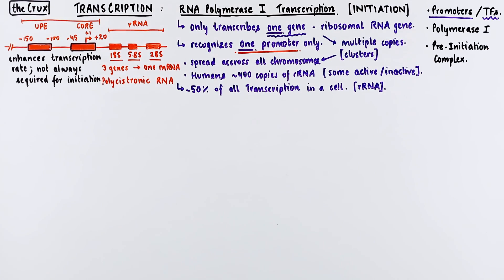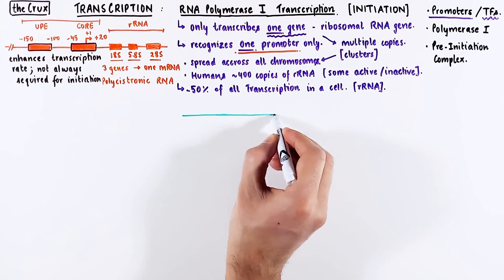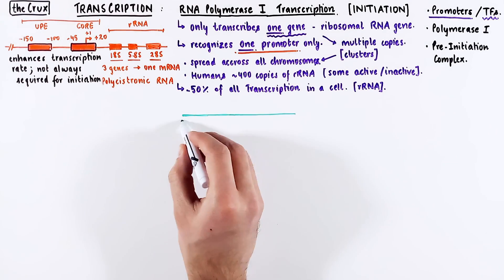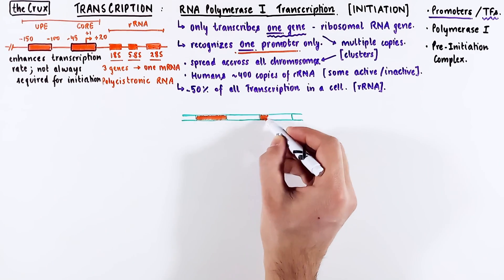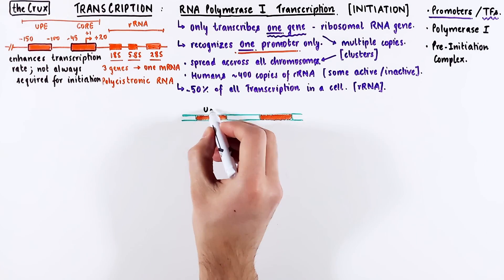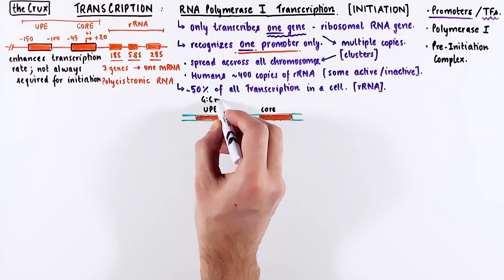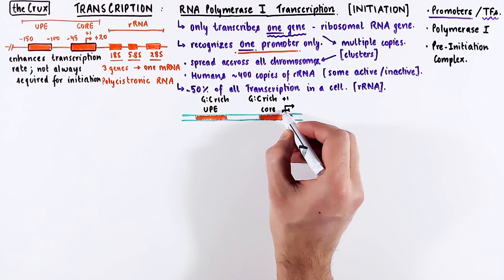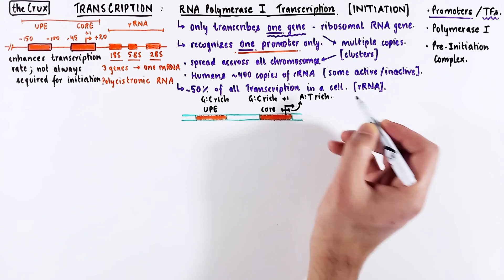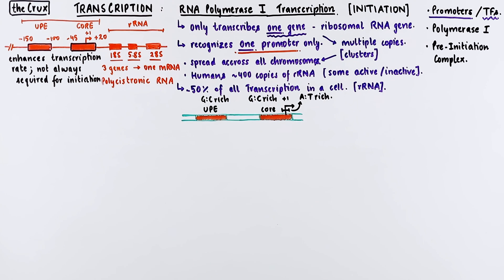Now let's talk about the transcription factors that recognize and bind to these promoter elements. Just some additional information about the promoters: the upstream promoter element and the core promoter are very GC-rich regions, which is very unusual for a promoter of a gene. But within the core promoter, somewhere close to the transcriptional start site, you have a small AT-rich region.